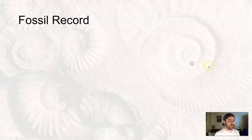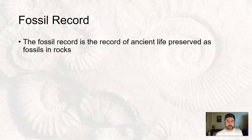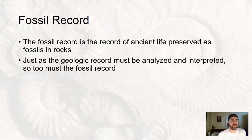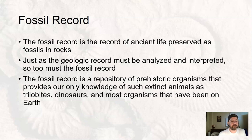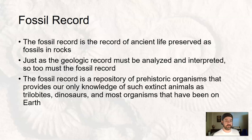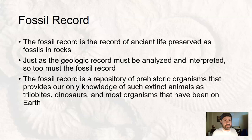All of these fossils make up the fossil record — just like the geologic record is rocks, the fossil record is the record of ancient life preserved in rocks. It needs to be analyzed and interpreted just like the geologic record. It's really the only knowledge we have of most organisms that have ever existed on Earth. We only live in a small slice of Earth's history — trilobites, dinosaurs, a number of organisms, we only know of them because of fossils. And it's not complete, because only certain things under certain conditions will fossilize, so there could be organisms we have no clue about.